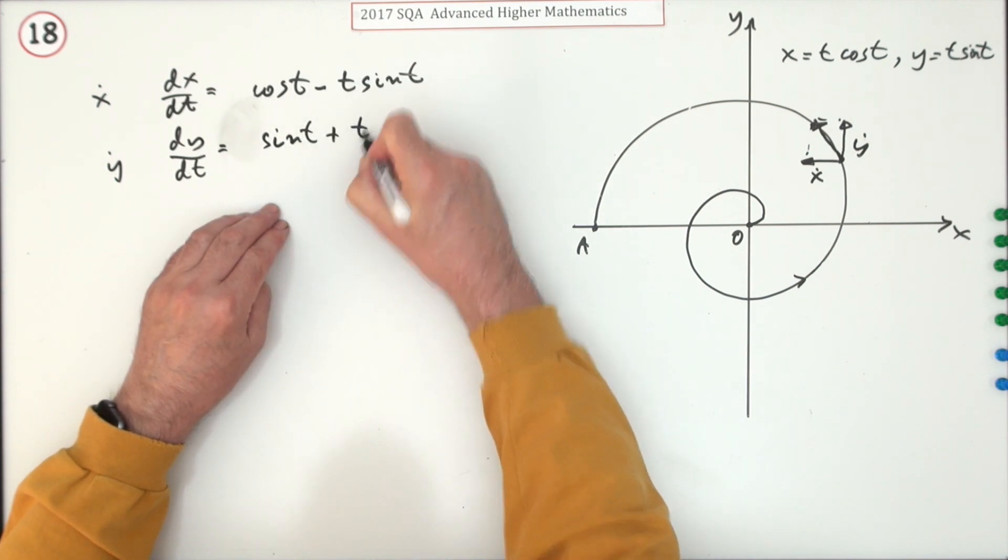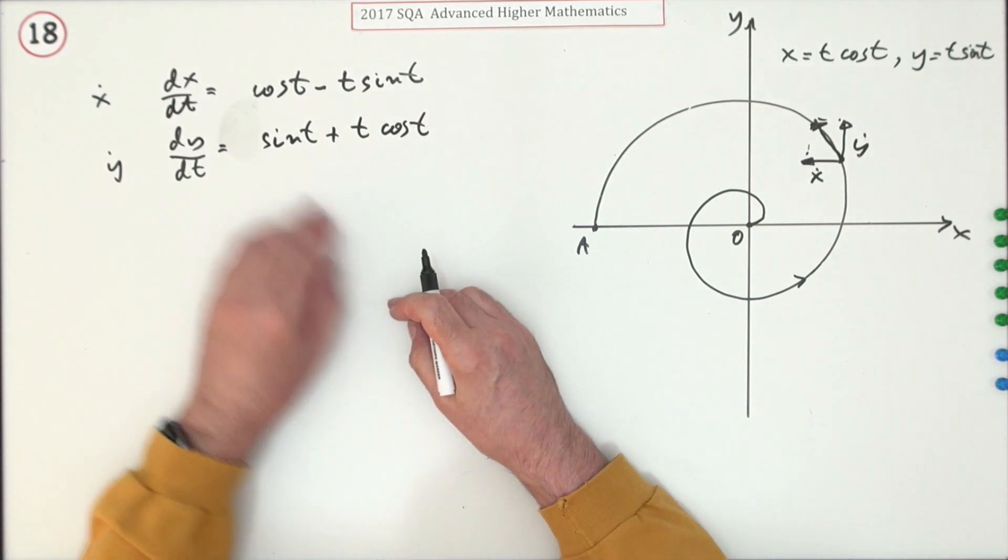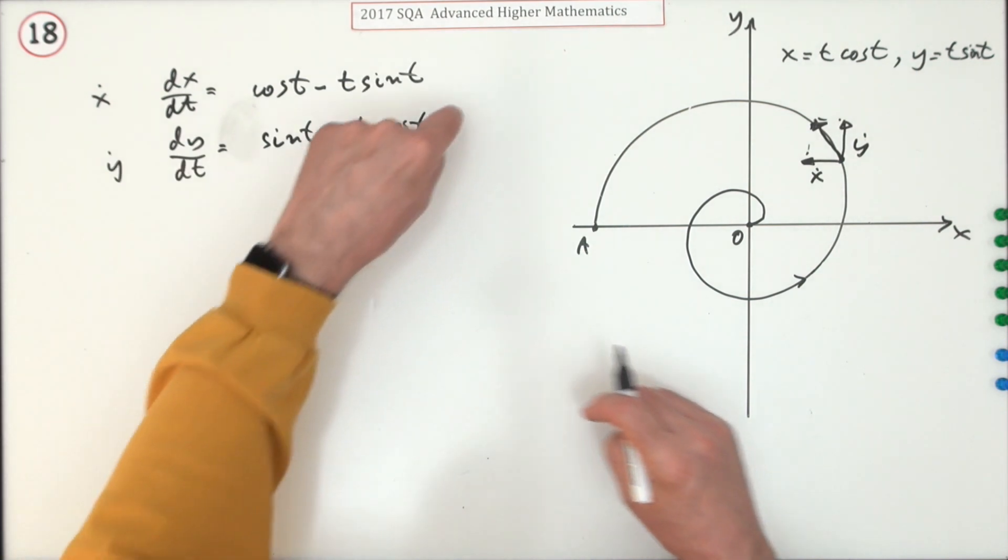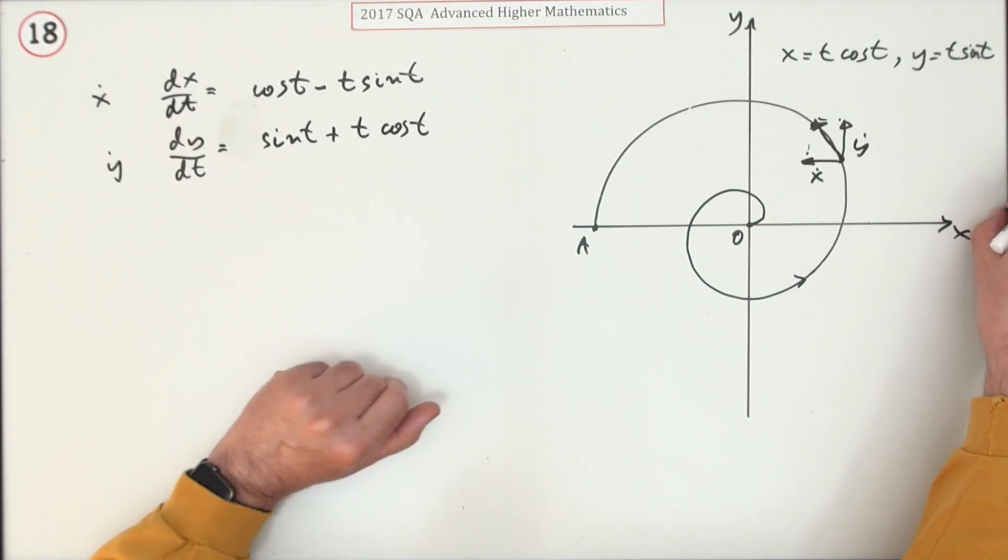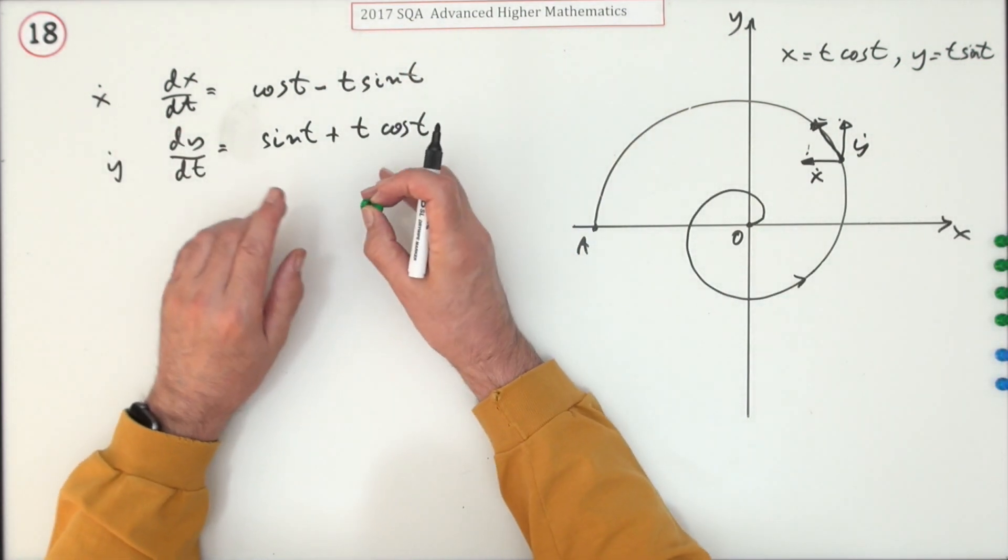That seems a fairly obvious start, but in fact they're throwing the marks out here. You're getting three marks for doing this—three of the five marks just for this. This is evidence of using the product rule.